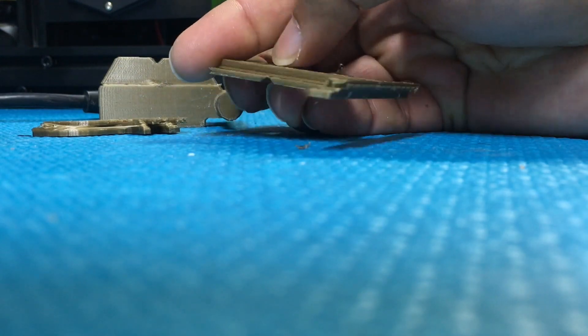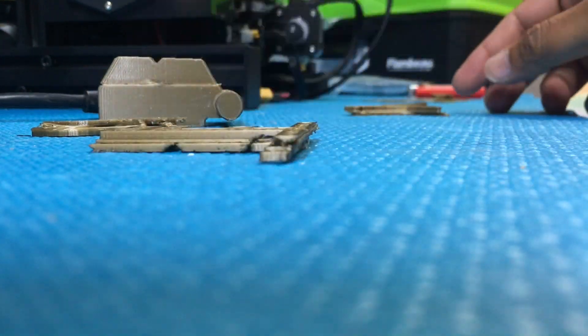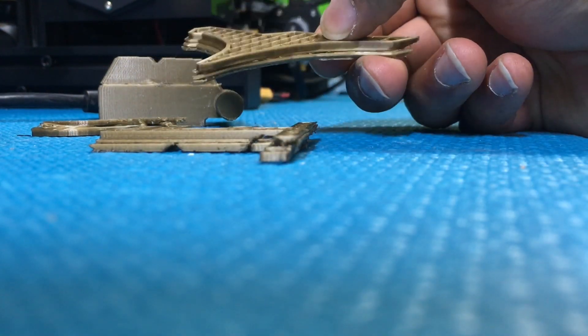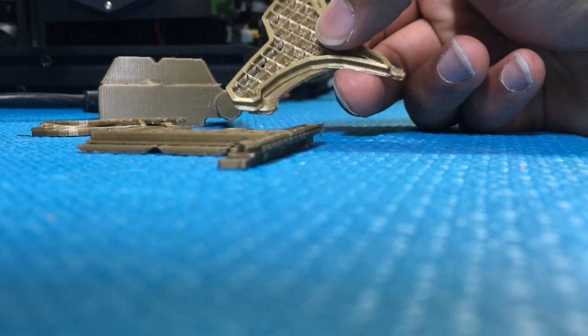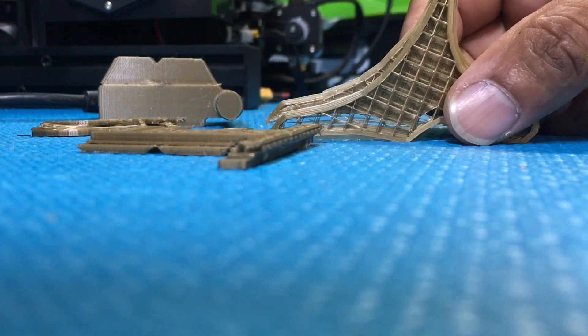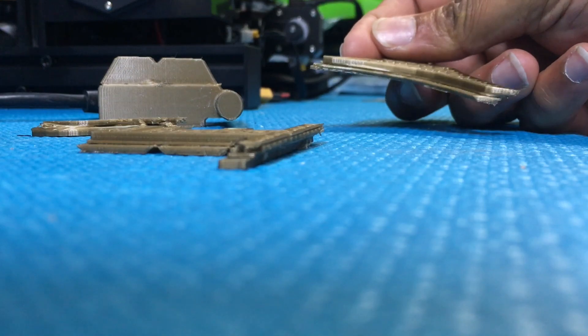If you notice, this is the trigger right here, has pretty severe layer shifts on it. This is another piece of the cosplay weapon that I'm building. That one also looks horrible. This is the hammerhead that's supposed to go on the back of the gun. That just, I mean it's ridiculous and I couldn't figure it out.